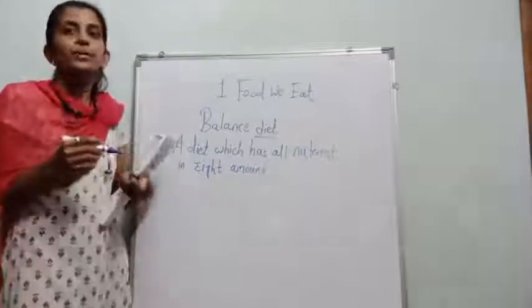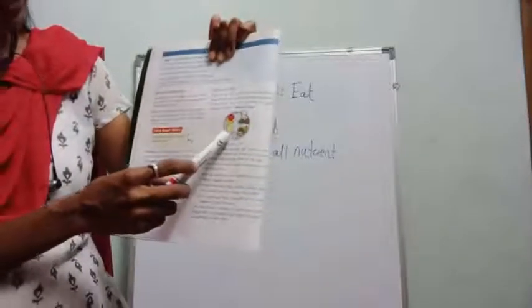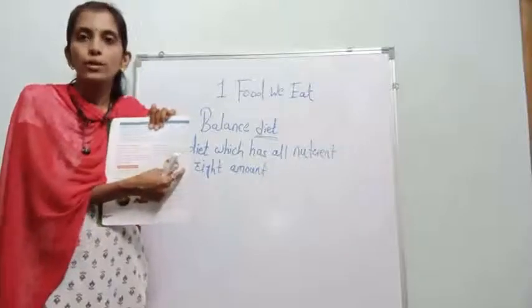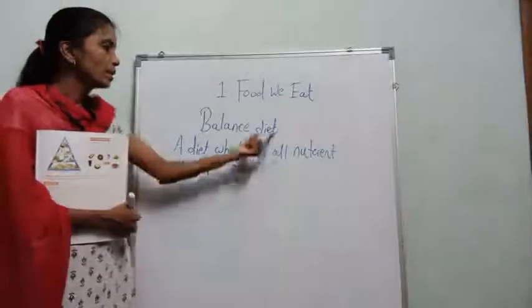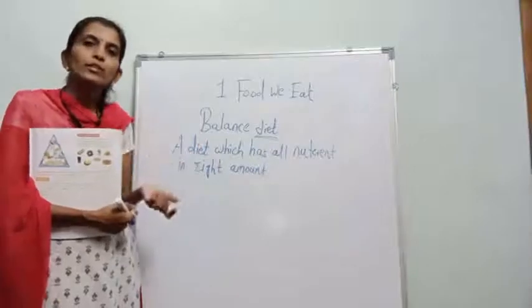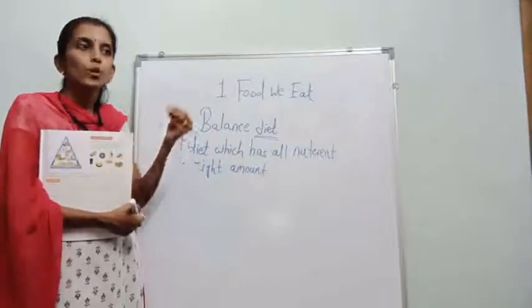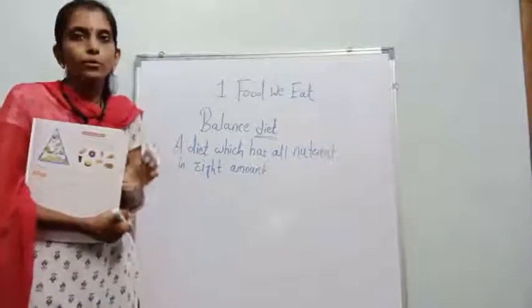In these pictures, a plate is shown, and in that plate, rice, chapatis, milk, fruits, and vegetables are all included. This is one type of balanced diet because that diet contains all types of nutrients. If we eat only what we like and avoid vegetables, we will not get the proper nutrients for our body. That's why you should eat all types of food and vegetables.